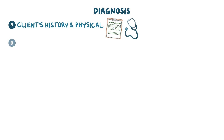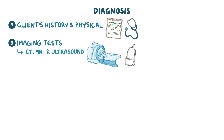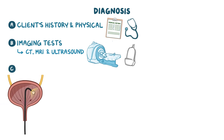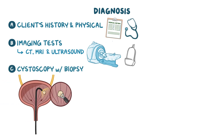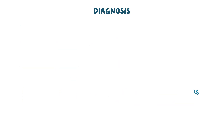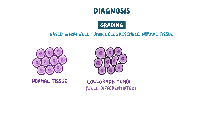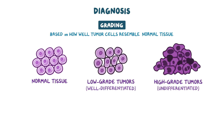Diagnosis begins with the client's history and physical assessment, followed by imaging tests such as CT, MRI, or ultrasound to visualize the tumor. Diagnosis is confirmed with cystoscopy and biopsy, which differentiates between benign and malignant tumors and provides information on grading and staging. Grading is based on how well the tumor cells resemble normal tissue, ranging from well-differentiated low-grade tumors to undifferentiated high-grade tumors, which are more likely to grow rapidly and metastasize.